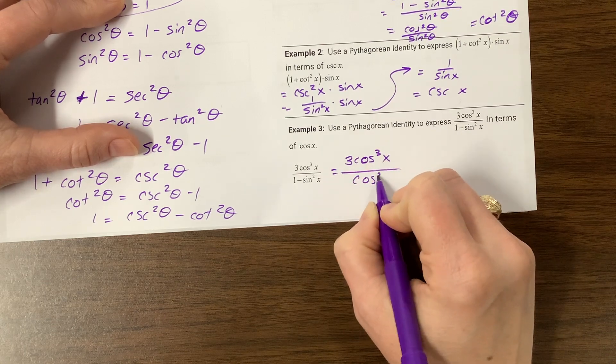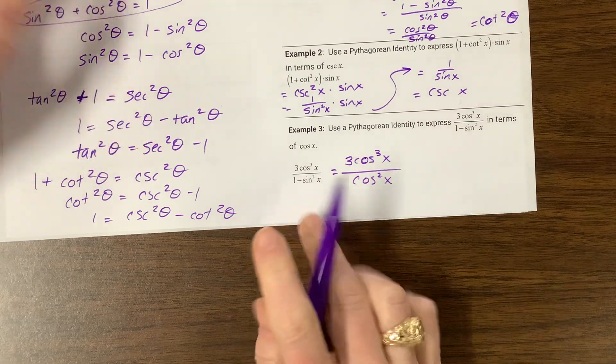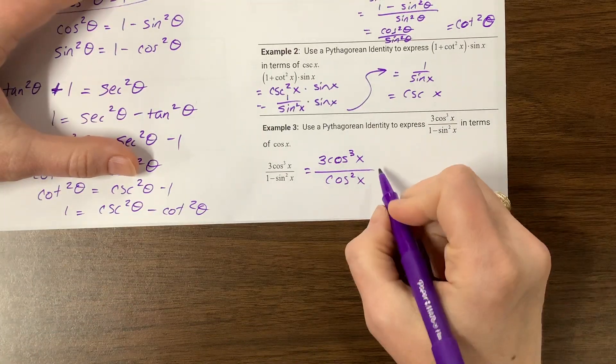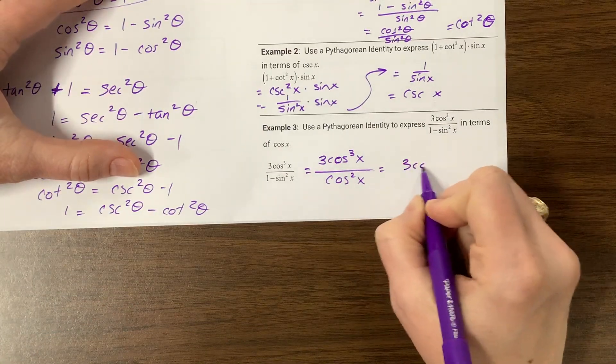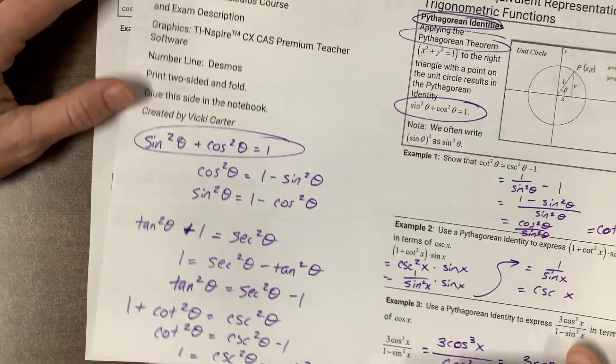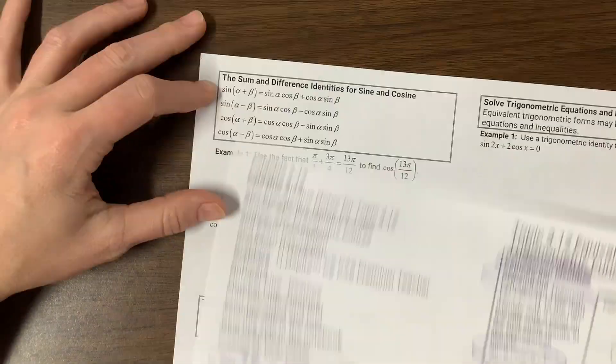Okay, so this becomes cosine squared x, because one minus sine squared x, one minus sine squared was equal to cosine squared. And this becomes three cosine of x. Let's see, what's the next one? Okay, you know what? I'm going to stop the video.